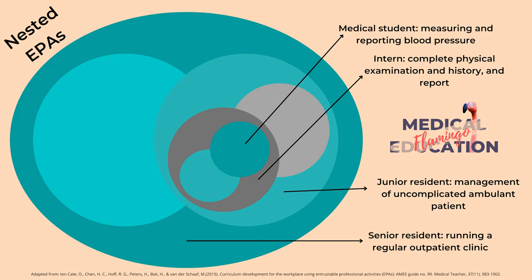As you see, smaller EPAs are nested in larger ones. You may not be able to fully understand if a resident has become a medical expert, professional, and communicator — but you can witness that the resident is able to cope with EPAs such as running a regular outpatient clinic, performing a routine checkup of a stable adult patient, conducting a laparoscopic cholecystectomy, or breaking bad news to a patient's family.